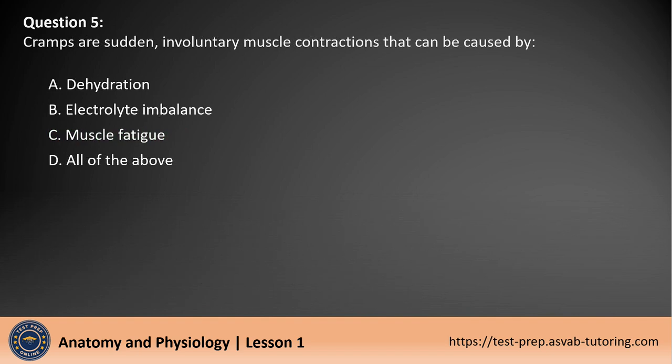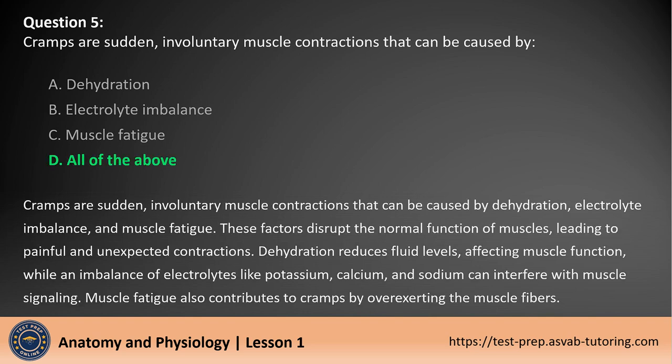Question 5. Cramps are sudden, involuntary muscle contractions that can be caused by dehydration, electrolyte imbalance, and muscle fatigue. These factors disrupt the normal function of muscles, leading to painful and unexpected contractions. Dehydration reduces fluid levels affecting muscle function, while an imbalance of electrolytes like potassium, calcium, and sodium can interfere with muscle signaling. Muscle fatigue also contributes to cramps by overexerting the muscle fibers.